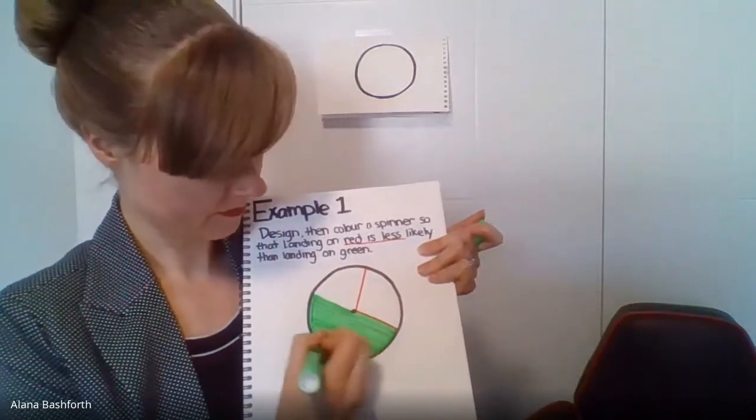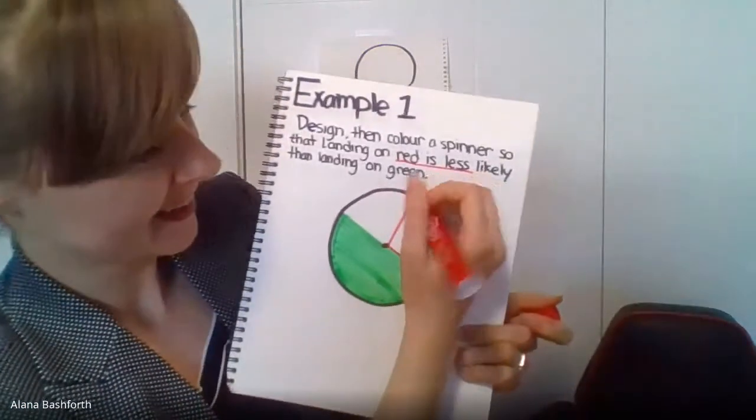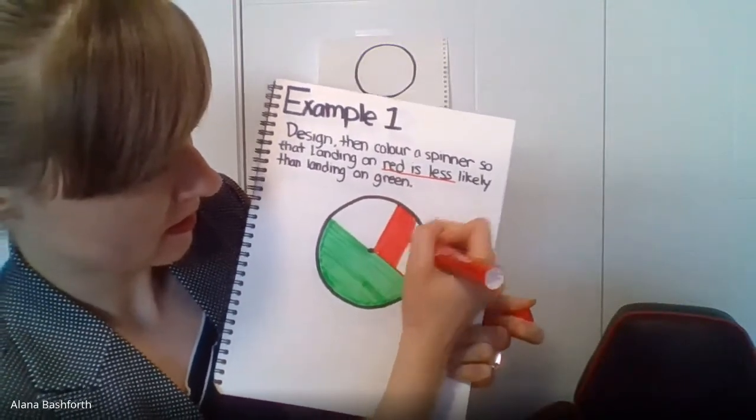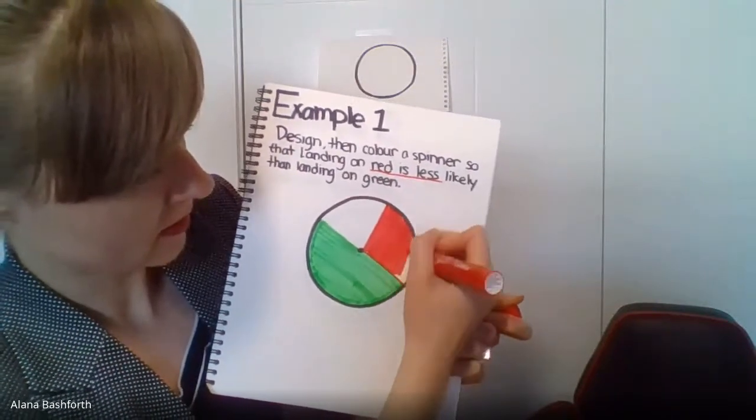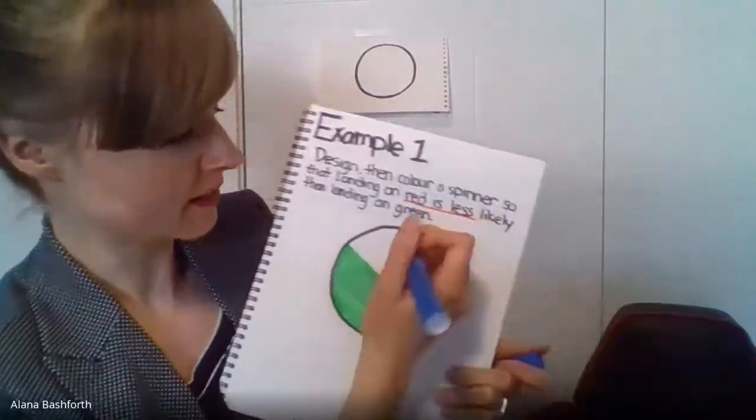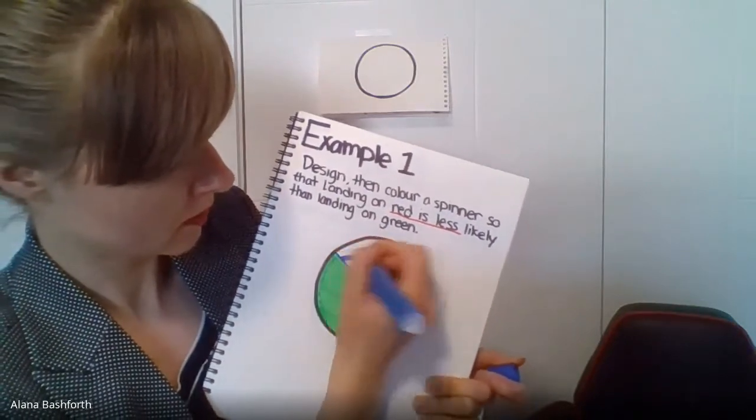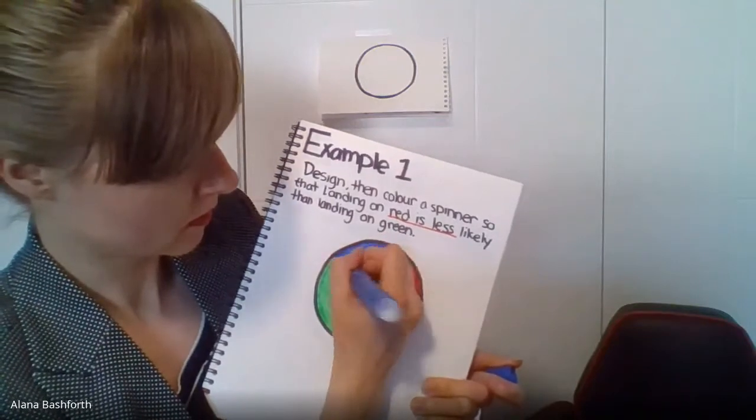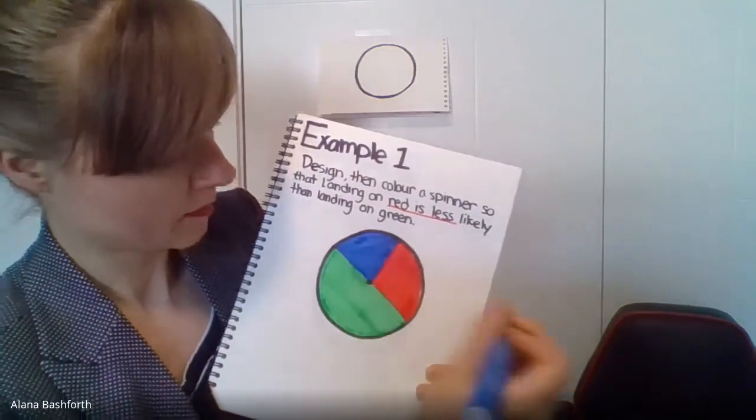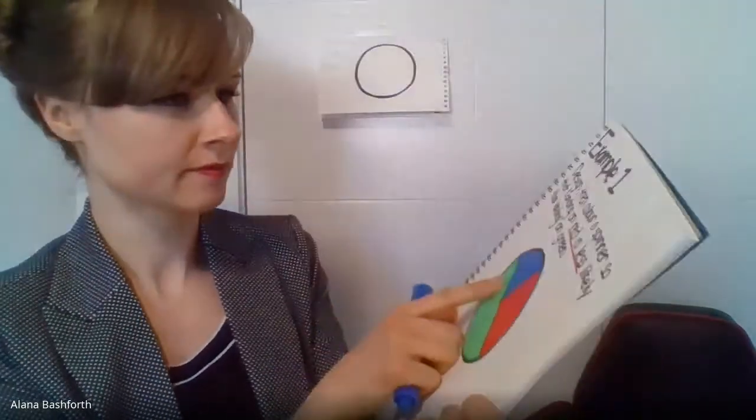Green. And you can see that - there we go - you can see that now all of this is green. And then I'll just color the rest of this blue. There we go, so it satisfies: red is less likely than landing on green. Green is way bigger than red.